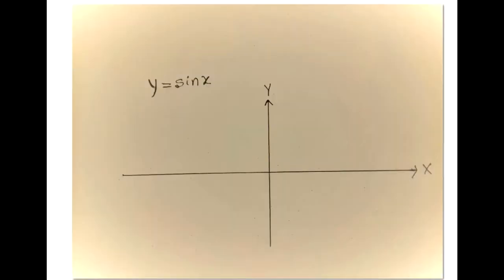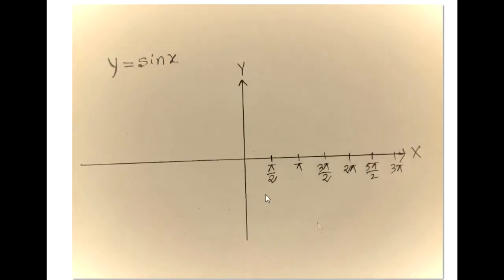First I am going to do the graph of y equals sin x. This is the x axis and this is the y axis. First I will mark on the x axis: pi over 2, 2pi over 2 which is pi, 3pi over 2, 4pi over 2 which is 2pi, 5pi over 2, and 3pi.